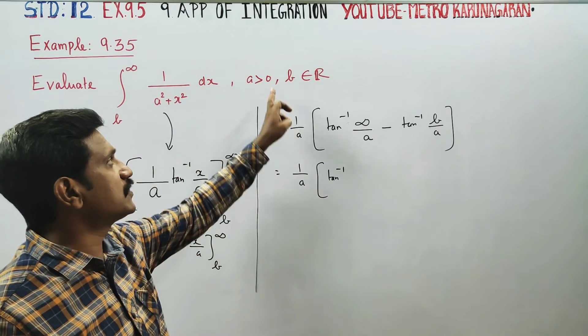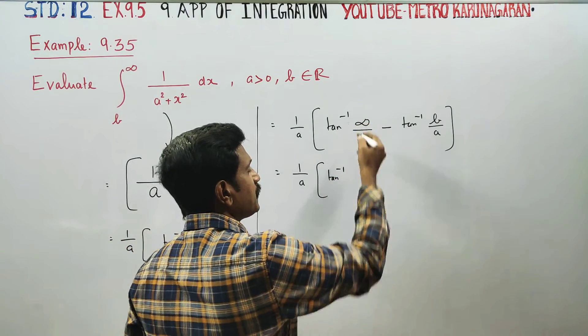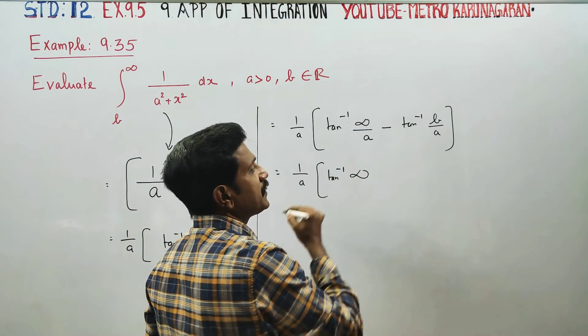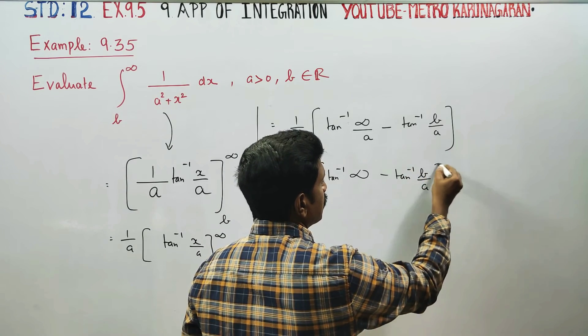Upper limit minus lower limit: 1/a [tan inverse of infinity/a - tan inverse of b/a]. Infinity by anything is infinity. When the denominator is greater than zero, infinity/a becomes infinity minus tan inverse of b/a.